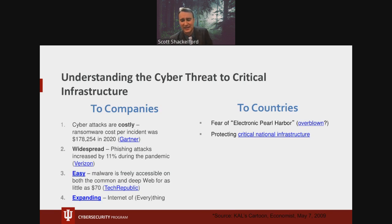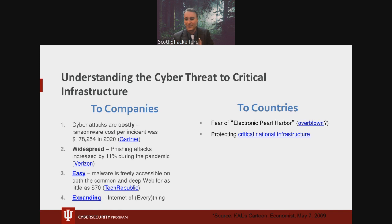Cyber attacks on critical infrastructure are nothing new. There's even a history book being worked on now covering how these have progressed over the decades. Depending on who you talk to, there are episodes dating back to the 80s — including the infamous alleged cyber attacks hitting the Soviet natural gas pipeline in the early 80s, reportedly involving CIA-sponsored logic bombs. There were also episodes involving the Morris worm in 1988, which was not even purposeful.